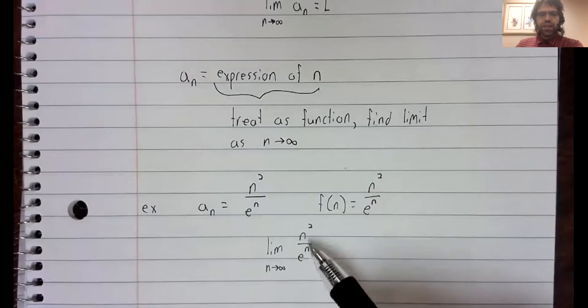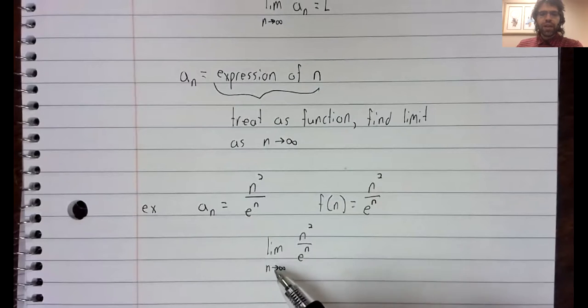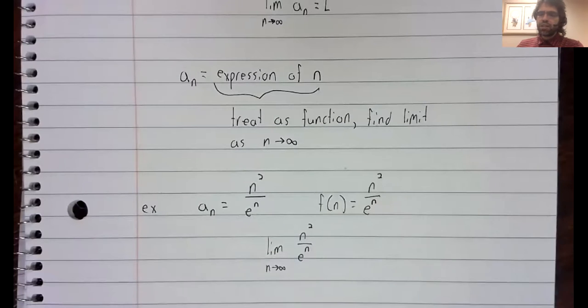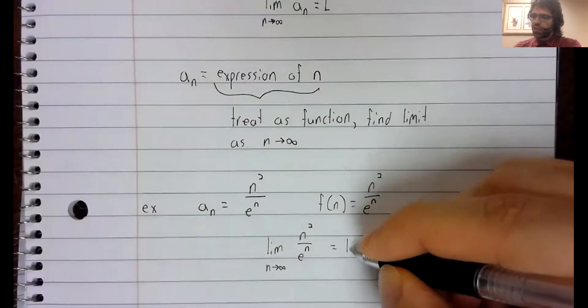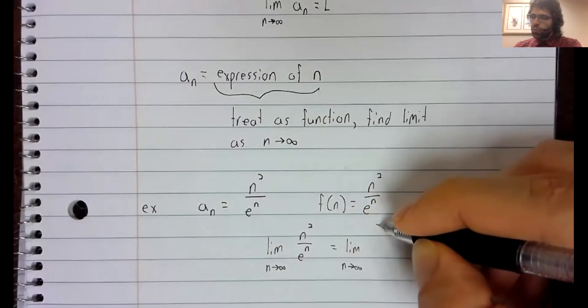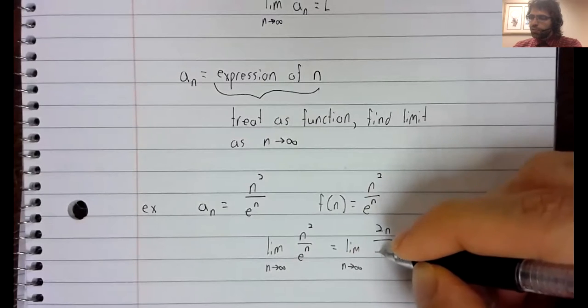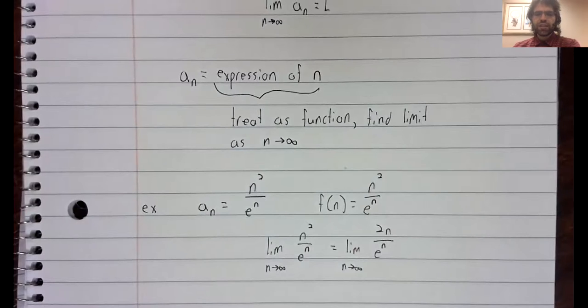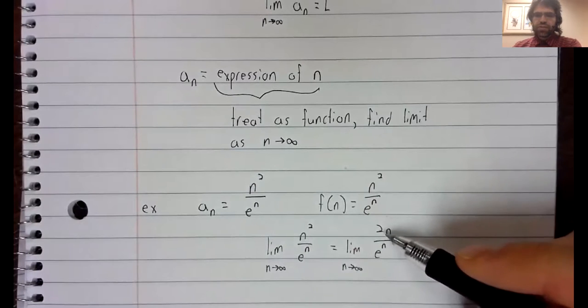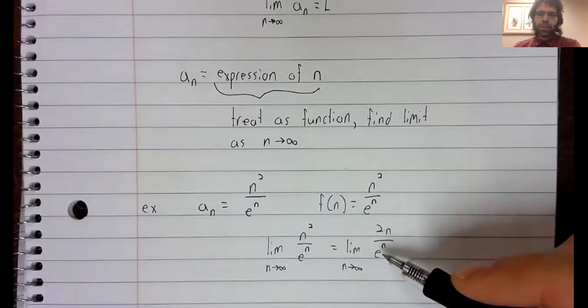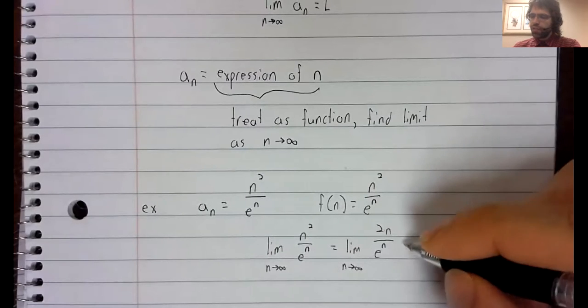This is an indeterminate form as n goes to infinity. N squared goes to infinity, and e to the n goes to infinity. L'Hopital's rule says try taking the derivative and see if that helps. This is still indeterminate: 2n goes to infinity, e to the n goes to infinity.